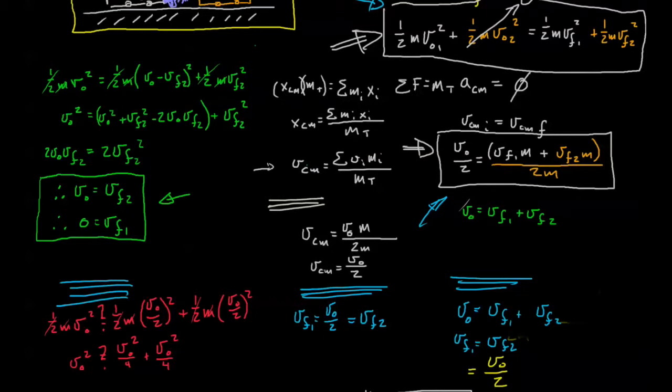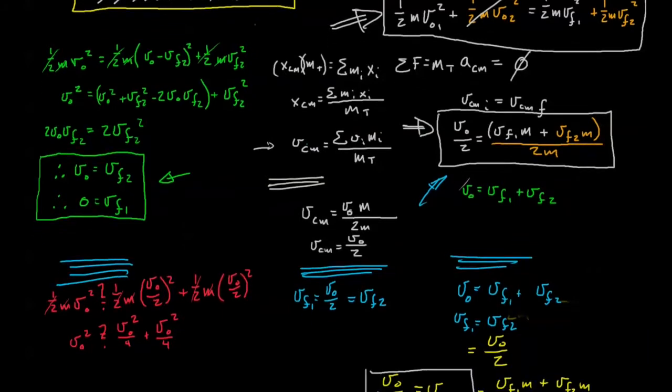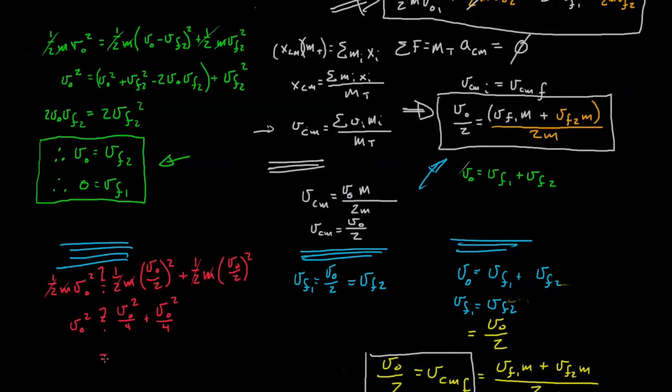And we can see rather easily—gosh, I don't even have to do this next line, but I'll do it just for kicks. v0 squared does not equal v0 squared over 2. Energy was not conserved.